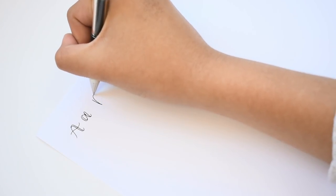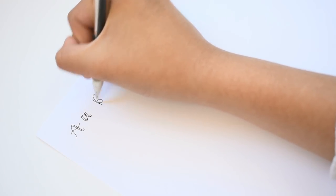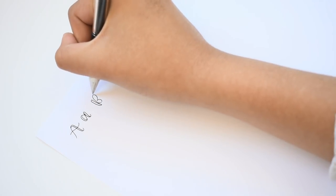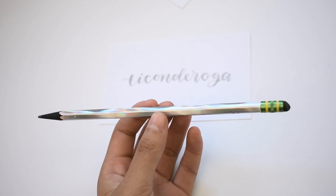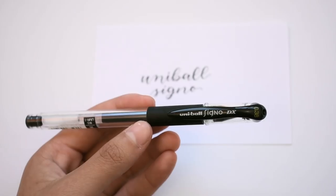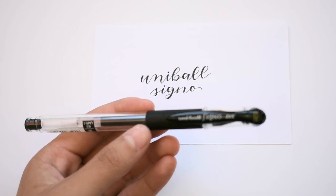Hi guys! Today I'm going to be showing you how to do faux calligraphy. You can do faux calligraphy using any tool like a pencil or a highlighter. In this video I'll be showing you using a Uniball Signo pen.